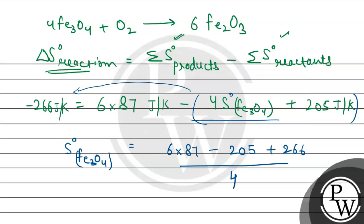And now we will do the calculation part. If we see in the calculation part, then 6 multiplied to the 87 is 522, minus, so first we will add 266, then minus 205 divided by 4.